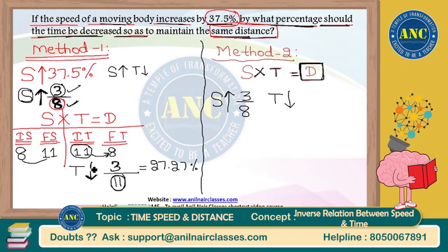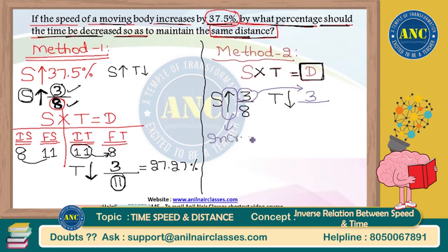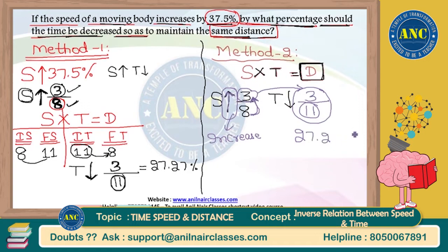The numerator is 3 — don't change it; copy-paste the same numerator. Since the question involves an increase, add the denominator and numerator: 8 + 3 = 11. So the fraction is 3 by 11. If the question involves a decrease, subtract denominator and numerator and write in the denominator. Convert 3 by 11 back to a percentage: it is 27.27 percent — a one-step answer.